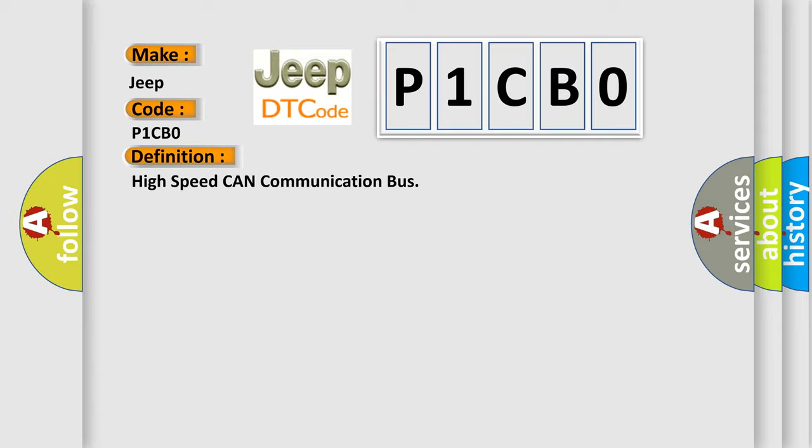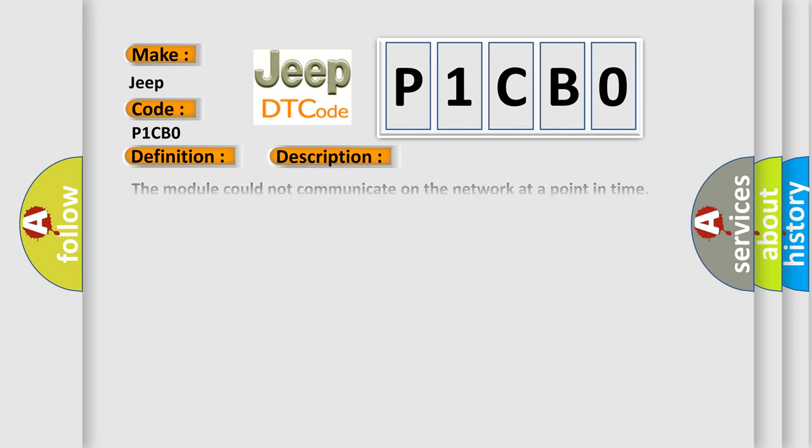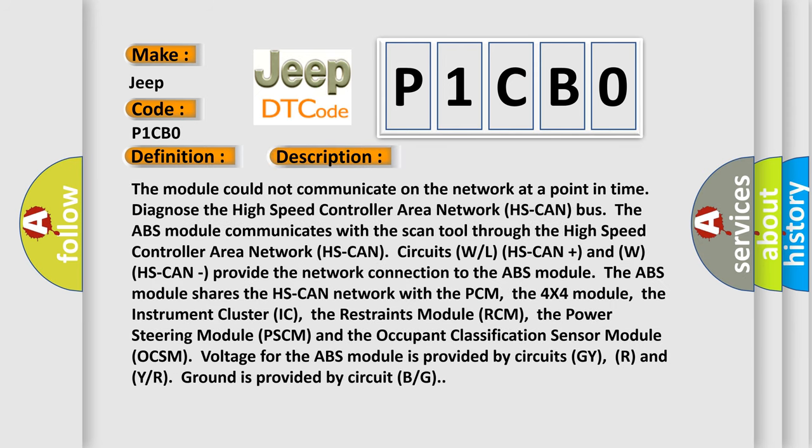The basic definition is: high speed CAN communication bus. The module could not communicate on the network at a point in time. Diagnose the high speed controller area network (HS CAN) bus. The ABS module communicates with the scan tool through the HS CAN circuits. The ABS module shares the HS CAN network with the PCM, the 4X4 module, the instrument cluster (IC), the restraints module (RCM), the power steering module (PSCM), and the occupant classification sensor module (OCSM). Voltage for the ABS module is provided by circuits GY.